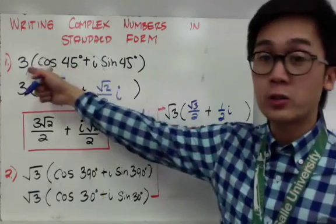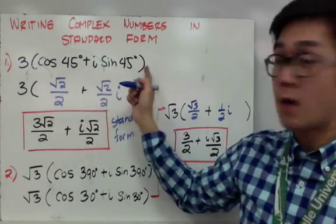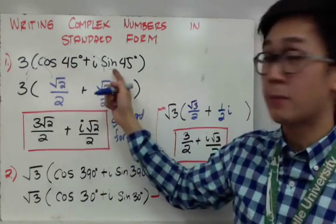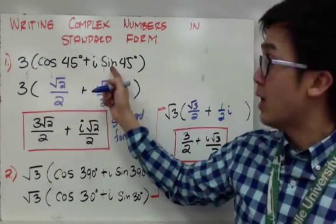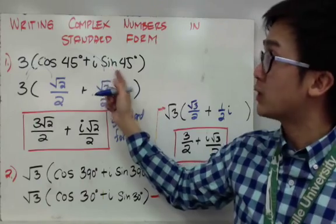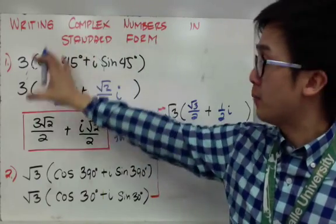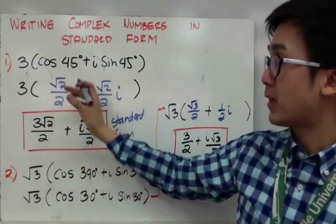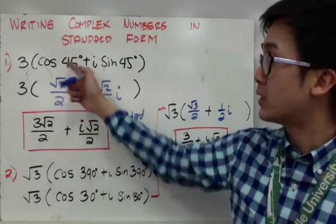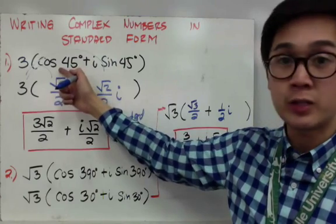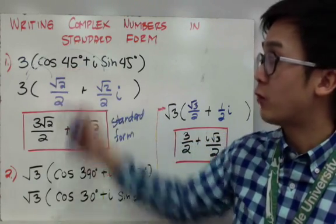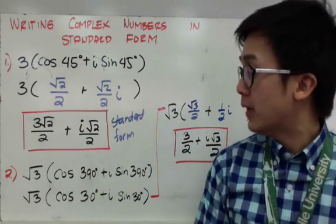This is also considered to be a complex number because you have a real part and an imaginary part. What we're doing is simply making it more basic by using the actual value of cosine 45° from the unit circle.